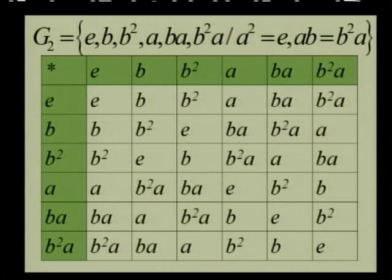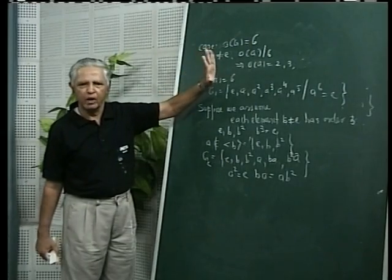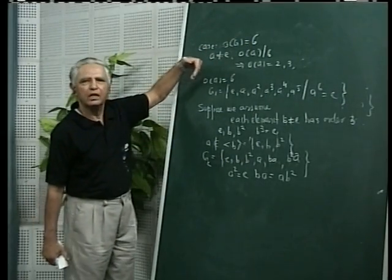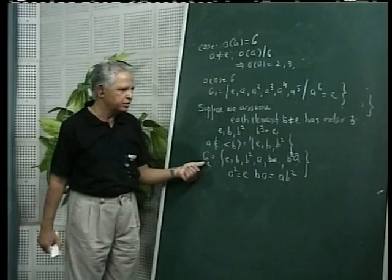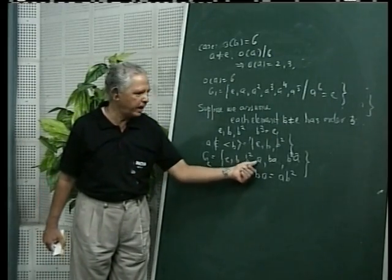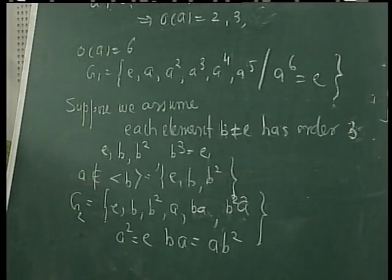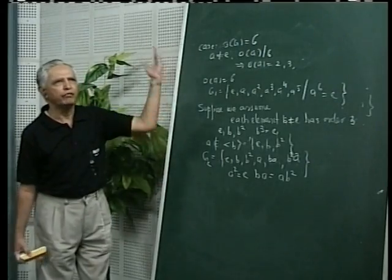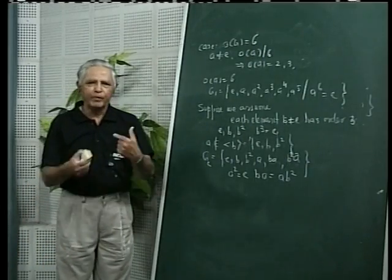The table for this group uses ba and b-squared a instead. So what we prove is: if you have a group of order 6, then up to isomorphism there are only two distinct groups — one is the cyclic group generated by an element of order 6, and second is G2 equals {e, b, b-squared, a, ab, ab-squared} where a-squared equals e and ba equals ab-squared. Thus, with the help of Lagrange's theorem, we have a classification of groups of order 4 and 6.